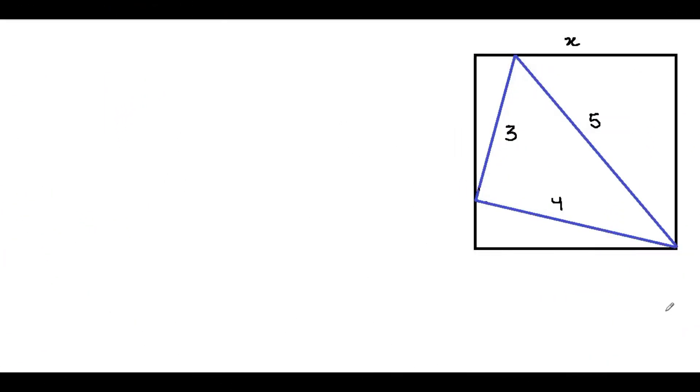How to solve for x, the length of the square's side? First of all, notice that the triangle has lengths 3, 4, and 5, so it's a right angle triangle as the three sides are a Pythagorean triplet.